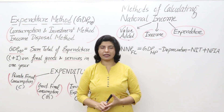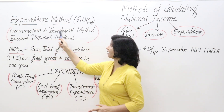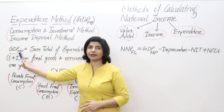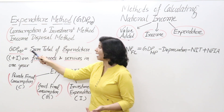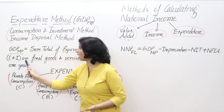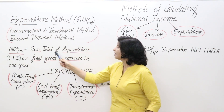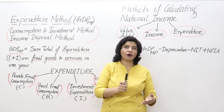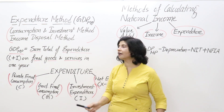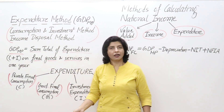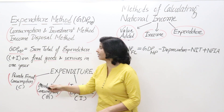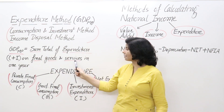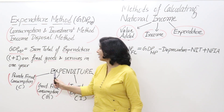The third method is the expenditure method, also known as the consumption and investment method and the income disposal method. It measures GDP at Market Price, and it is the sum total of expenditure — that is C plus I — on final goods and services in one year. The whole economy — government, private sector, and producer sector — spends on consumption and investment on final goods only, not intermediate goods.